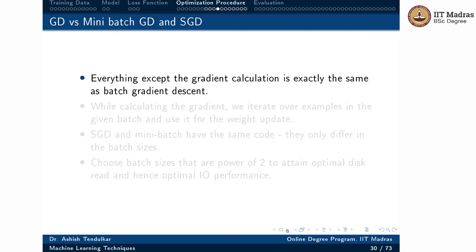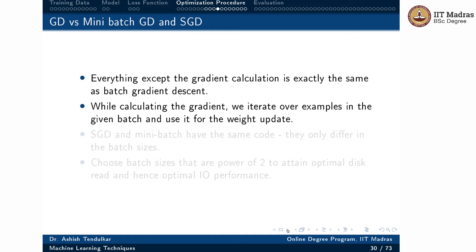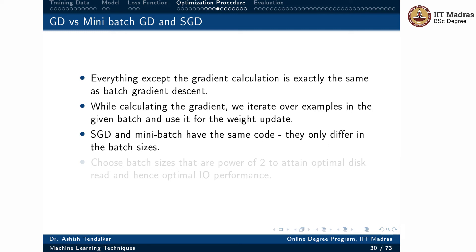Let us compare gradient descent (GD), mini-batch gradient descent, and SGD. Everything except the gradient calculation is exactly the same across all three. They all differ only in the gradient calculation step. While calculating the gradient, we iterate over examples in the given batch and use it for the weight update. SGD and mini-batch gradient descent have exactly the same code — the only difference is the batch size. SGD uses batch size of one, mini-batch uses batch size greater than one, and if the batch size equals the full training set, that is full batch gradient descent.